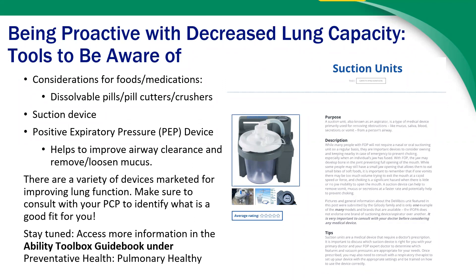Other proactive measures include pill cutters, crushers, or dissolvable supplement versions for medications. For some patients, a suction device or a positive expiratory pressure device are good to keep at home to improve airway clearance and loosen mucus. Talk to your respirologist about what is most helpful in your situation. The IFOPA is hoping to have an ability toolbox guidebook with a pulmonary health section available.